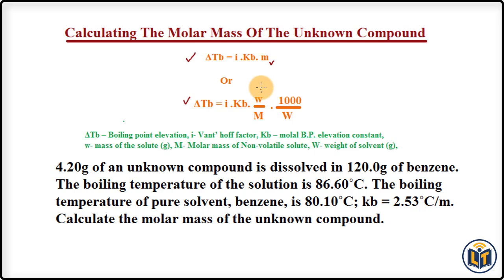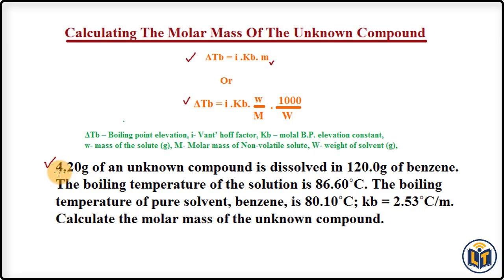You can pick any formula for your convenience to calculate molar mass. The problem states that 4.20 grams of an unknown compound — meaning the molar mass is unknown — is dissolved in 120.0 grams of benzene, which is the solvent, and the compound is the solute.